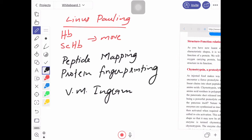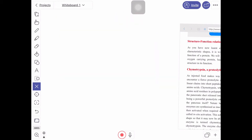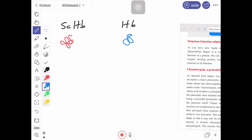So let us move to this technique. VM Ingram, he has taken two proteins, that is sickle cell hemoglobin and normal hemoglobin. Let us take this is sickle cell hemoglobin and this is normal hemoglobin. And what did he do?